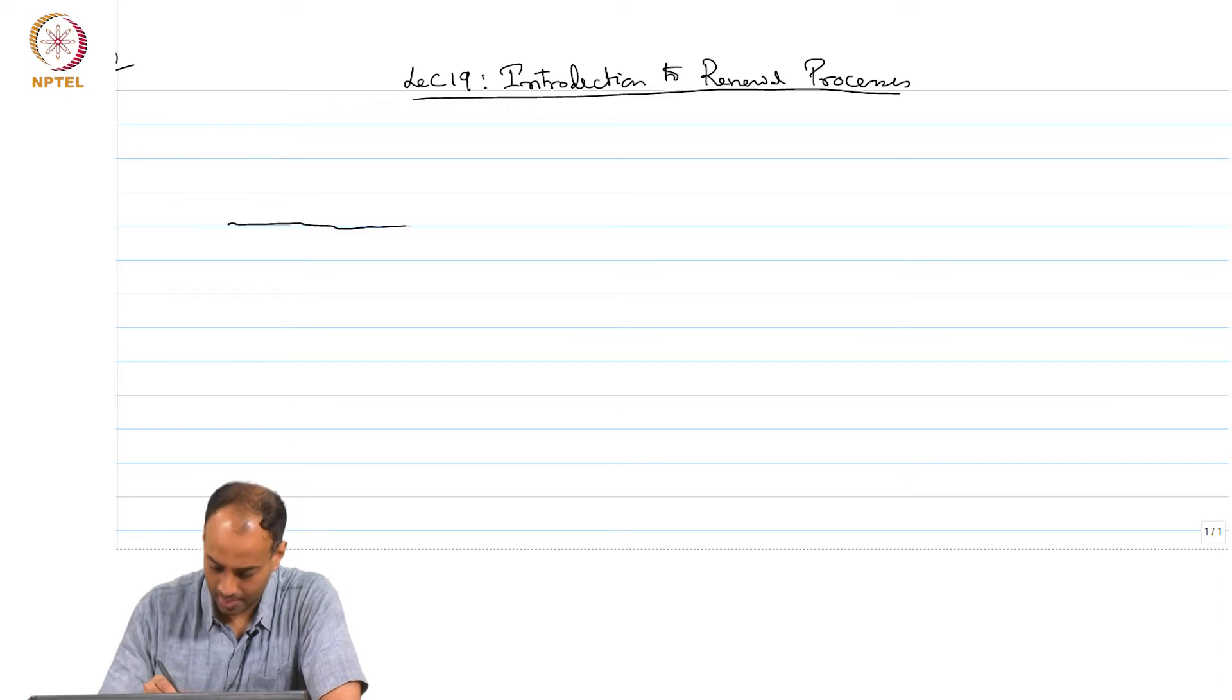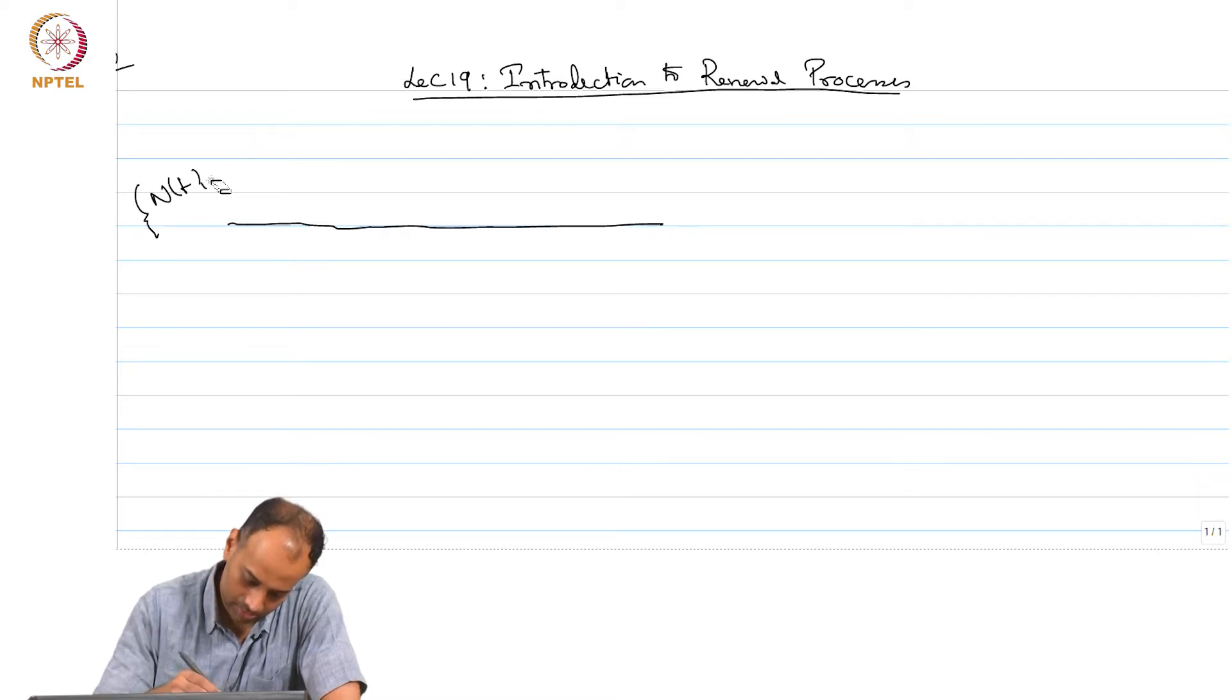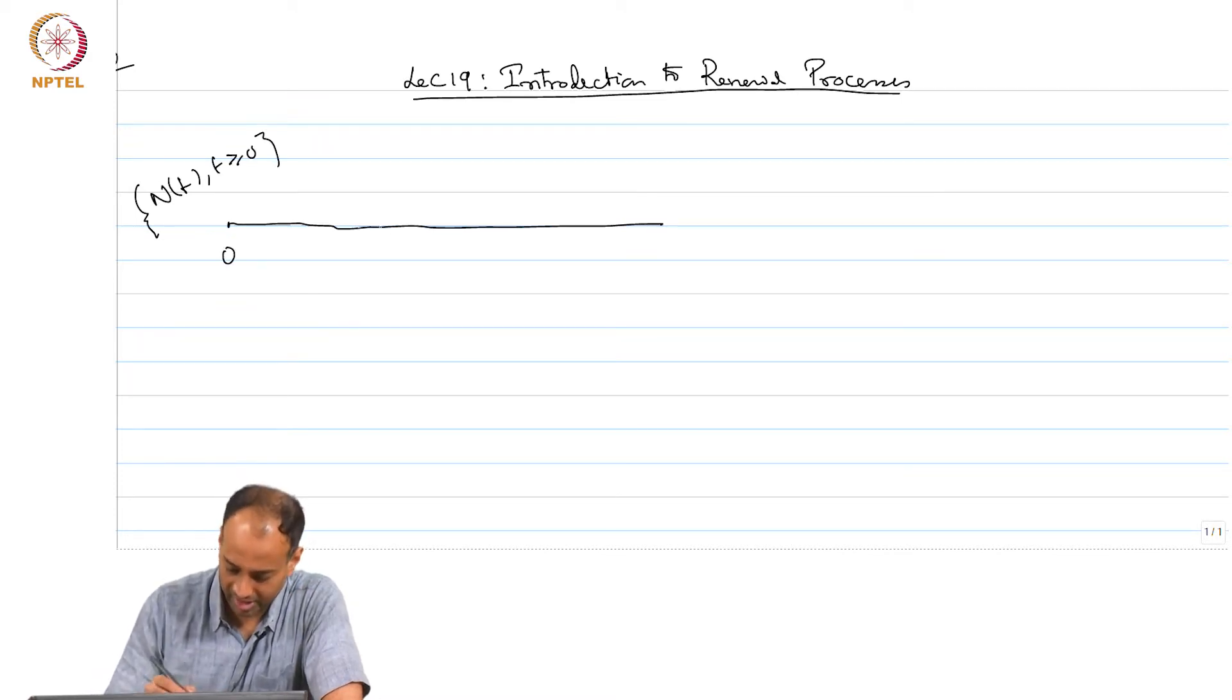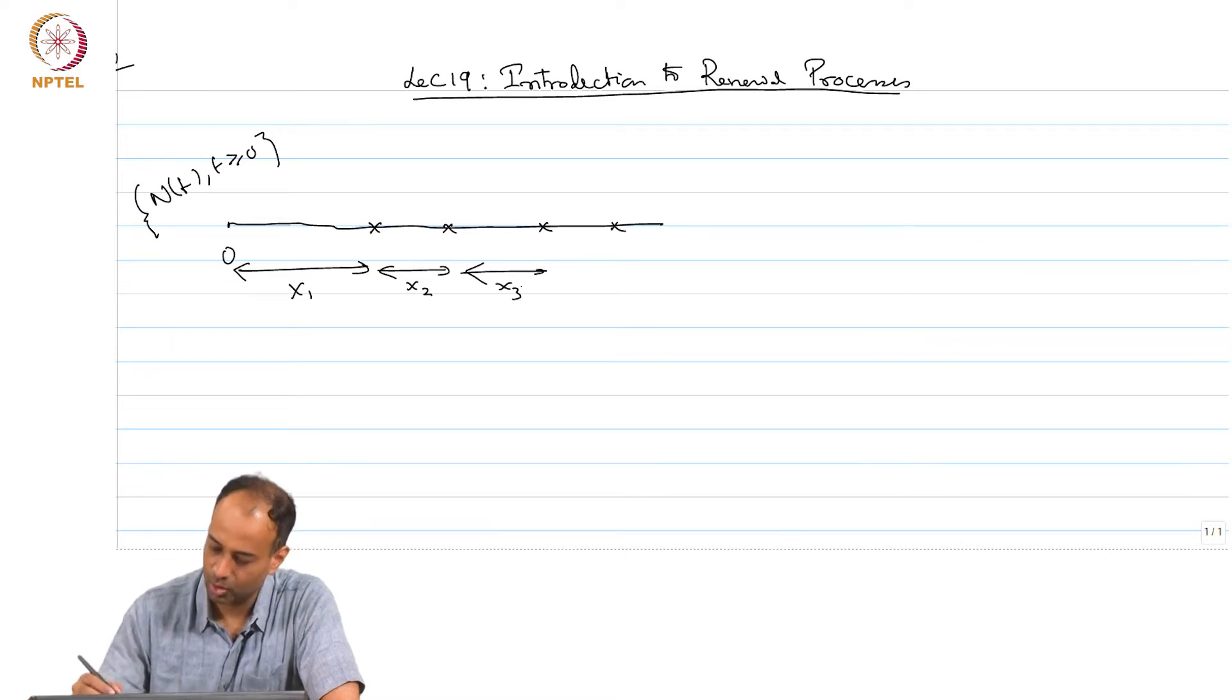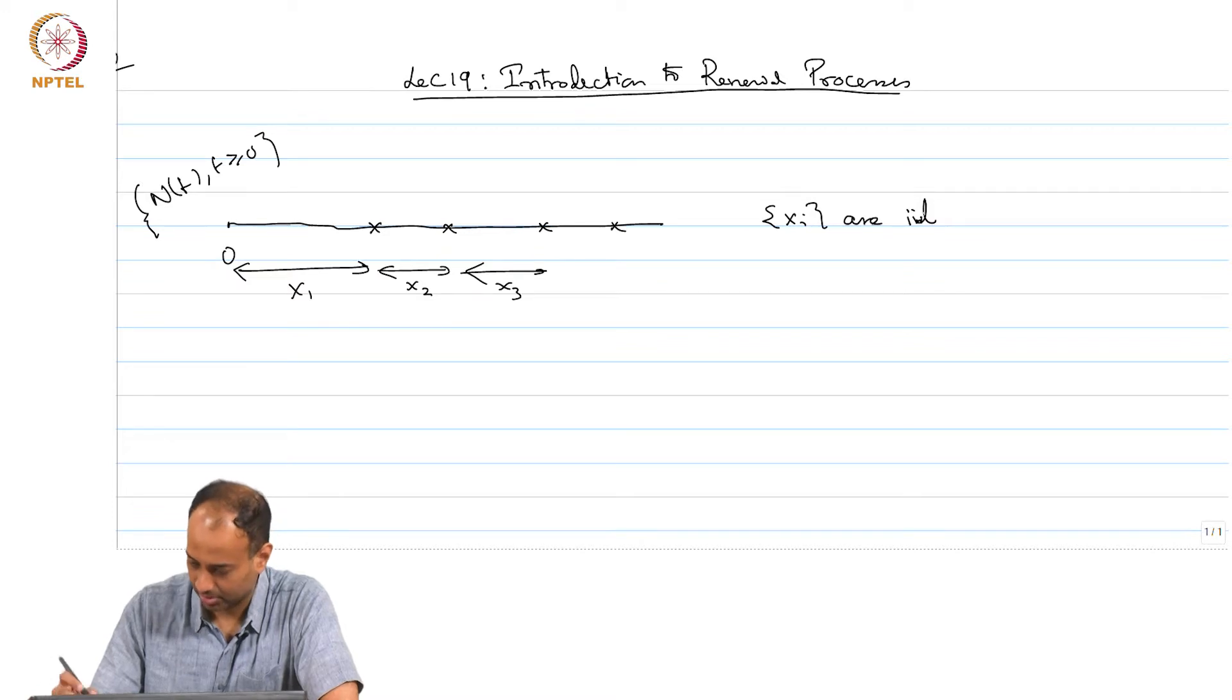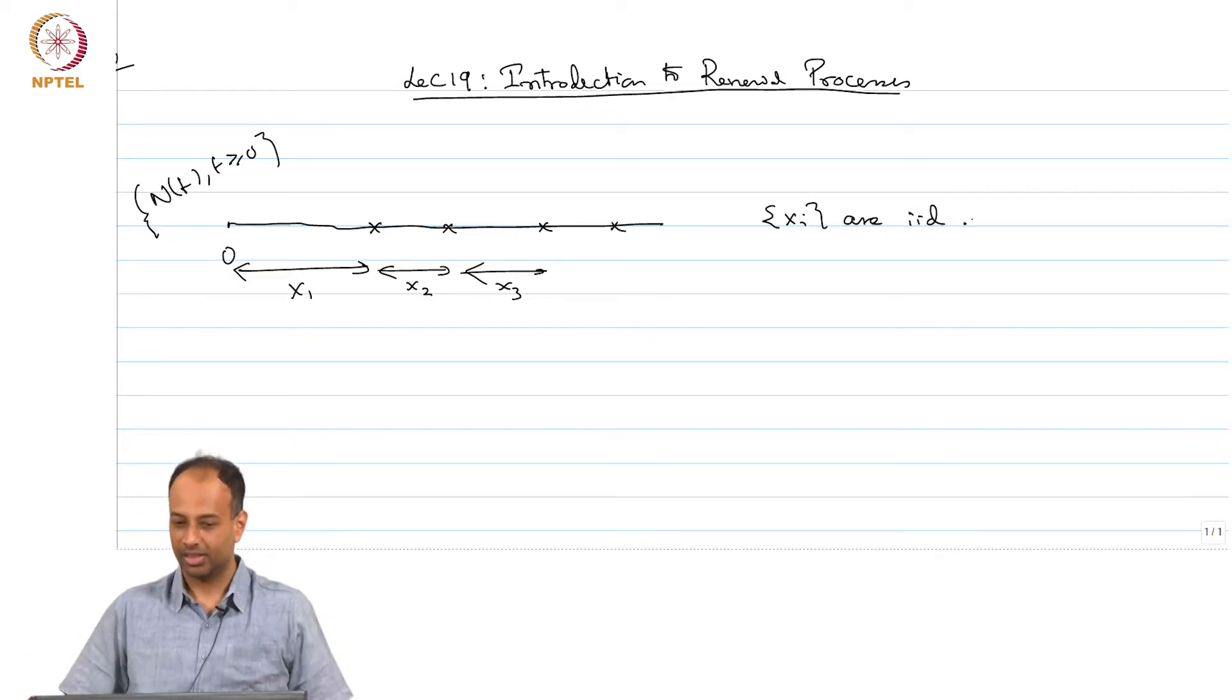So, a renewal process is a counting process NT, characterized by certain inter-arrival times X1, X2, X3 and so on, where Xi are assumed to be independent and identically distributed. That is what a renewal process is.